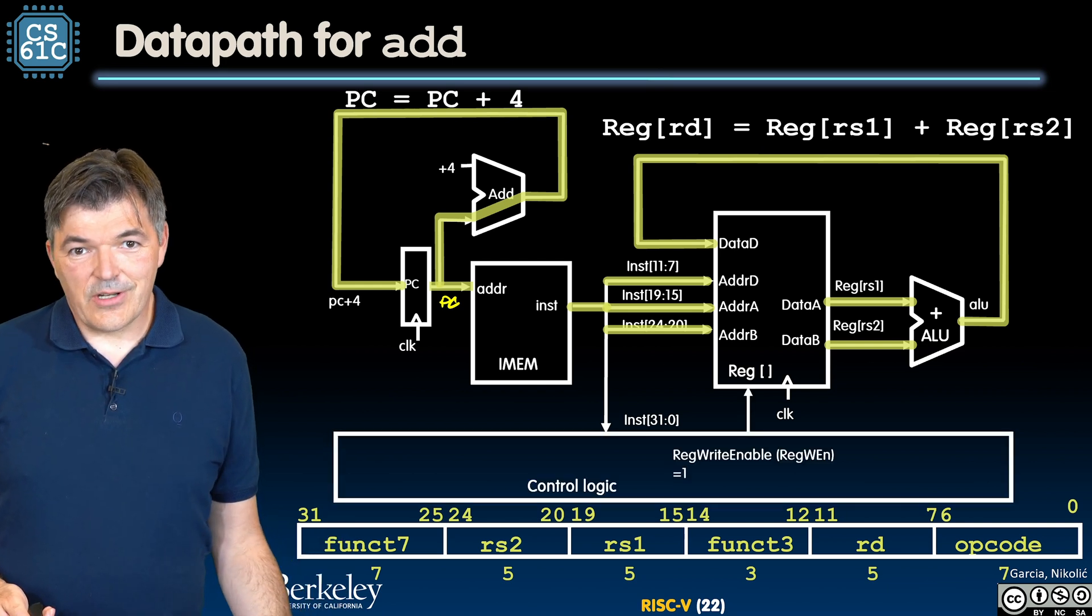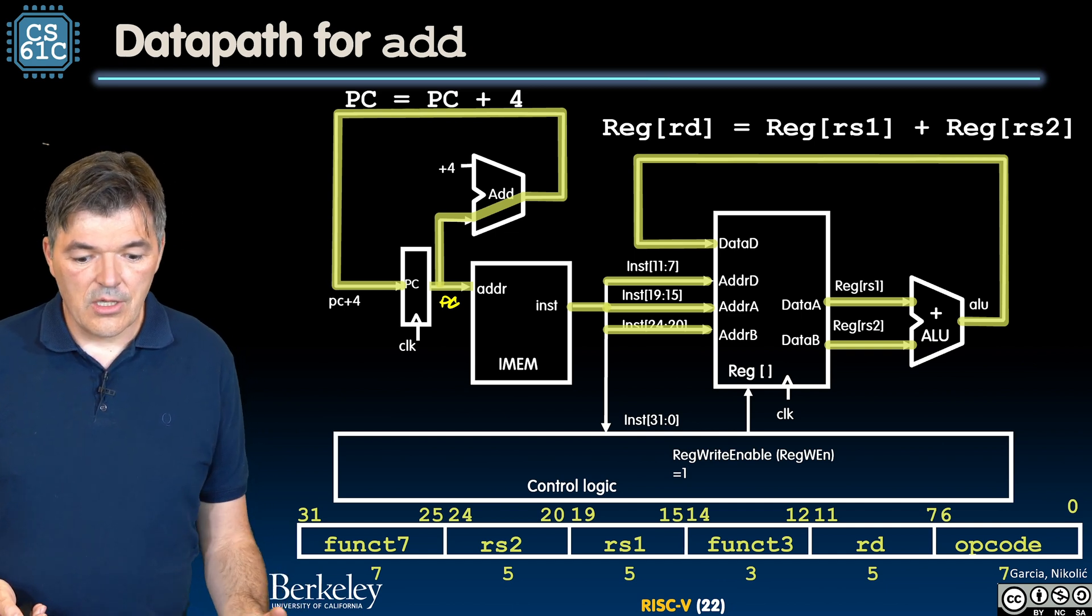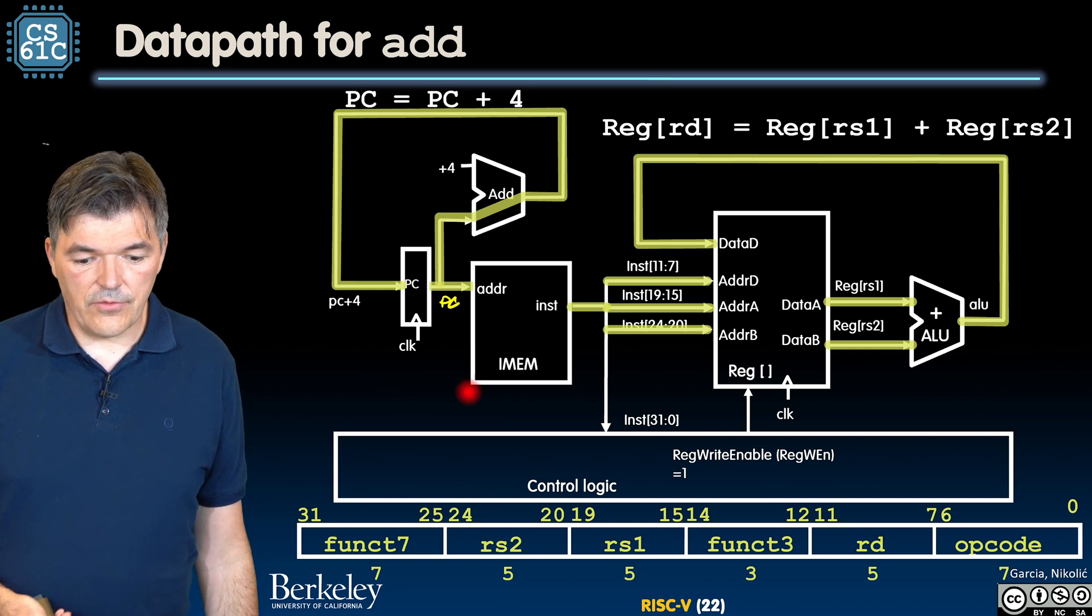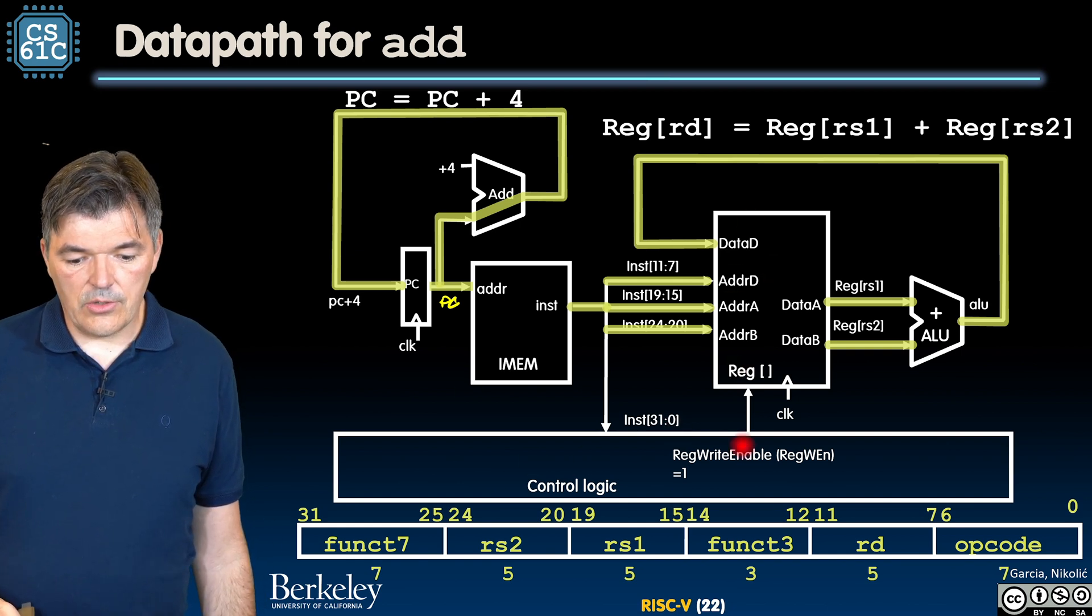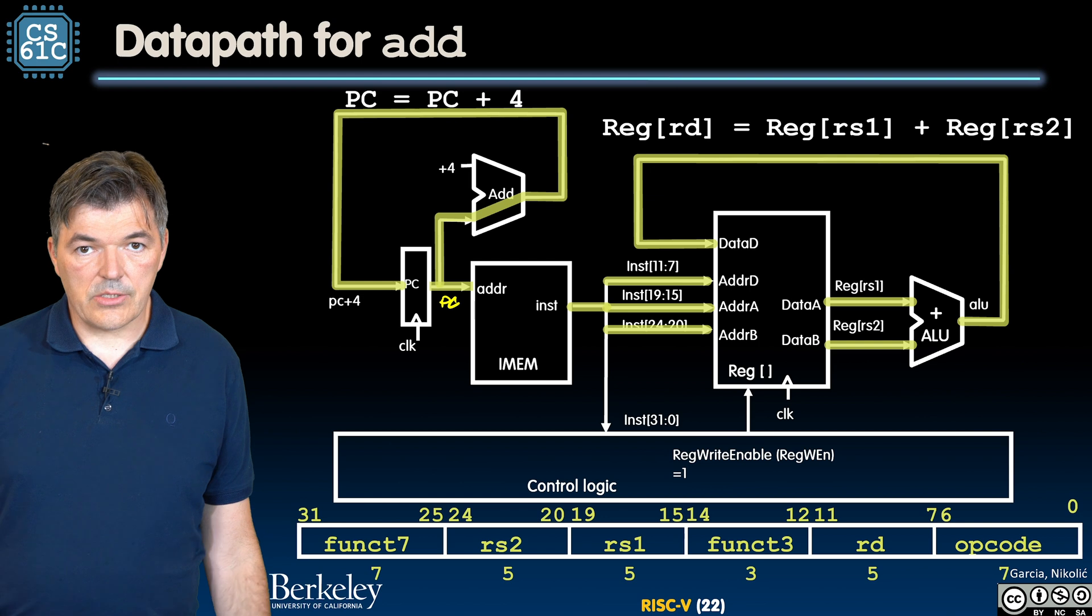What do we need to complete this? We need control, and in this case control is fairly simple because we have a fixed function ALU that just does the addition. So all we need to do is to enable register file for writing. We need to have this control register that enables writing into the register file asserted. The signal reg write enable has to be equal to one.